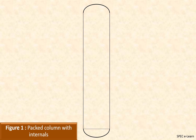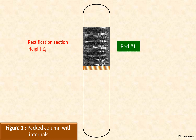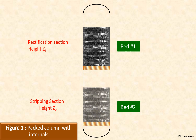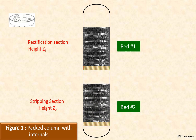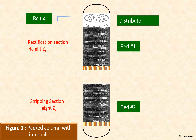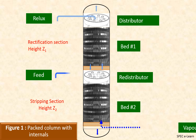This sketch illustrates a typical packed distillation column consisting of two beds — bed 1 of height Z1 for the rectification section and bed 2 of height Z2 for the stripping section. On top of bed 1 is placed a distributor to receive and distribute the reflux over the surface of bed 1. A redistributor collects and redistributes the liquid from the bottom of bed 1 as well as the feed to the column.